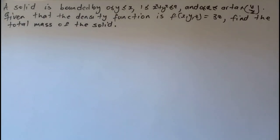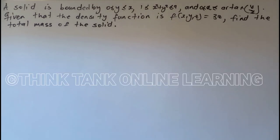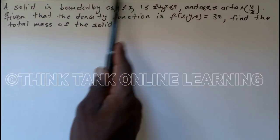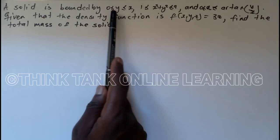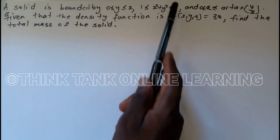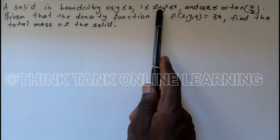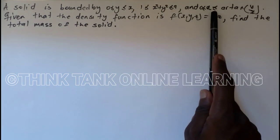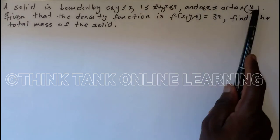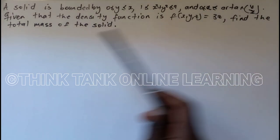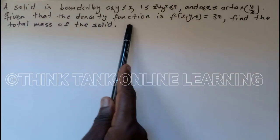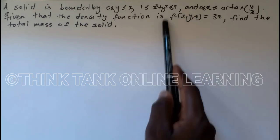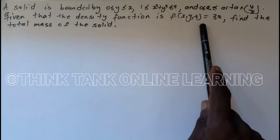Welcome to Think Tank Online Learning. In this video I'm going to look at mass using triple integrals. A solid is bounded by the following limits: y ranges from 0 to x; x² + y² ranges from 1 to 9; z ranges from 0 to arctan(y/x). The density function is not constant — it is 3z.